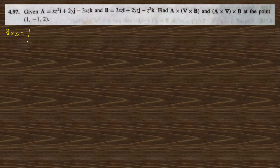So this is nothing but the determinant with I cap, J cap, K cap in the first row; del/dx, del/dy, del/dz in the second row. The vector V has components 3xz, 2yz, and minus z-squared.